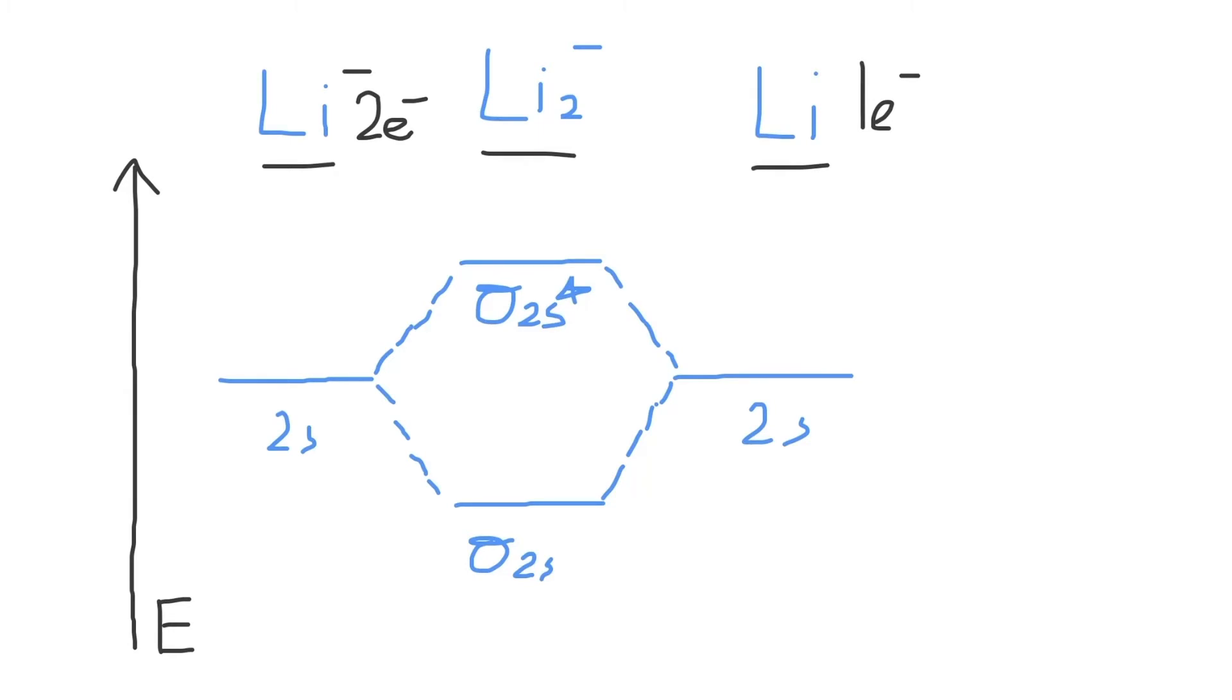So combined, Li2 minus will now have a total of three electrons to fill into our molecular orbitals. We can fill in this 2s atomic orbital with these two electrons, and this one electron will fall here.